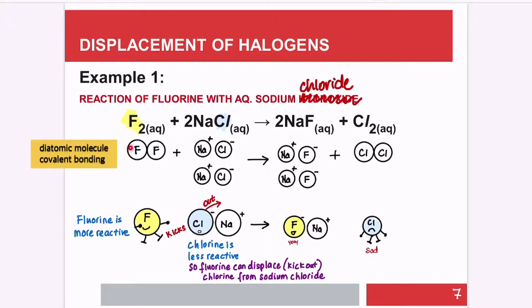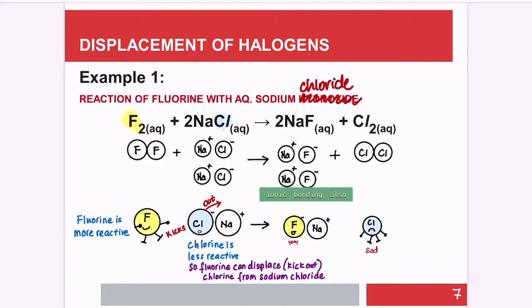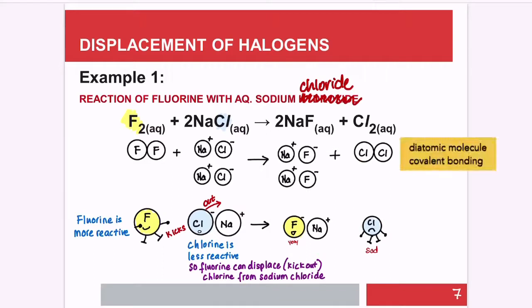In the atomic diagram: fluorine forms a diatomic covalent bond while sodium chloride has ionic bonding, shown as separated ions. Fluorine is more reactive so it will kick the chloride out of sodium chloride, because chlorine is less reactive. Fluorine displaces chlorine and takes over the position to form sodium fluoride, while chlorine is released.